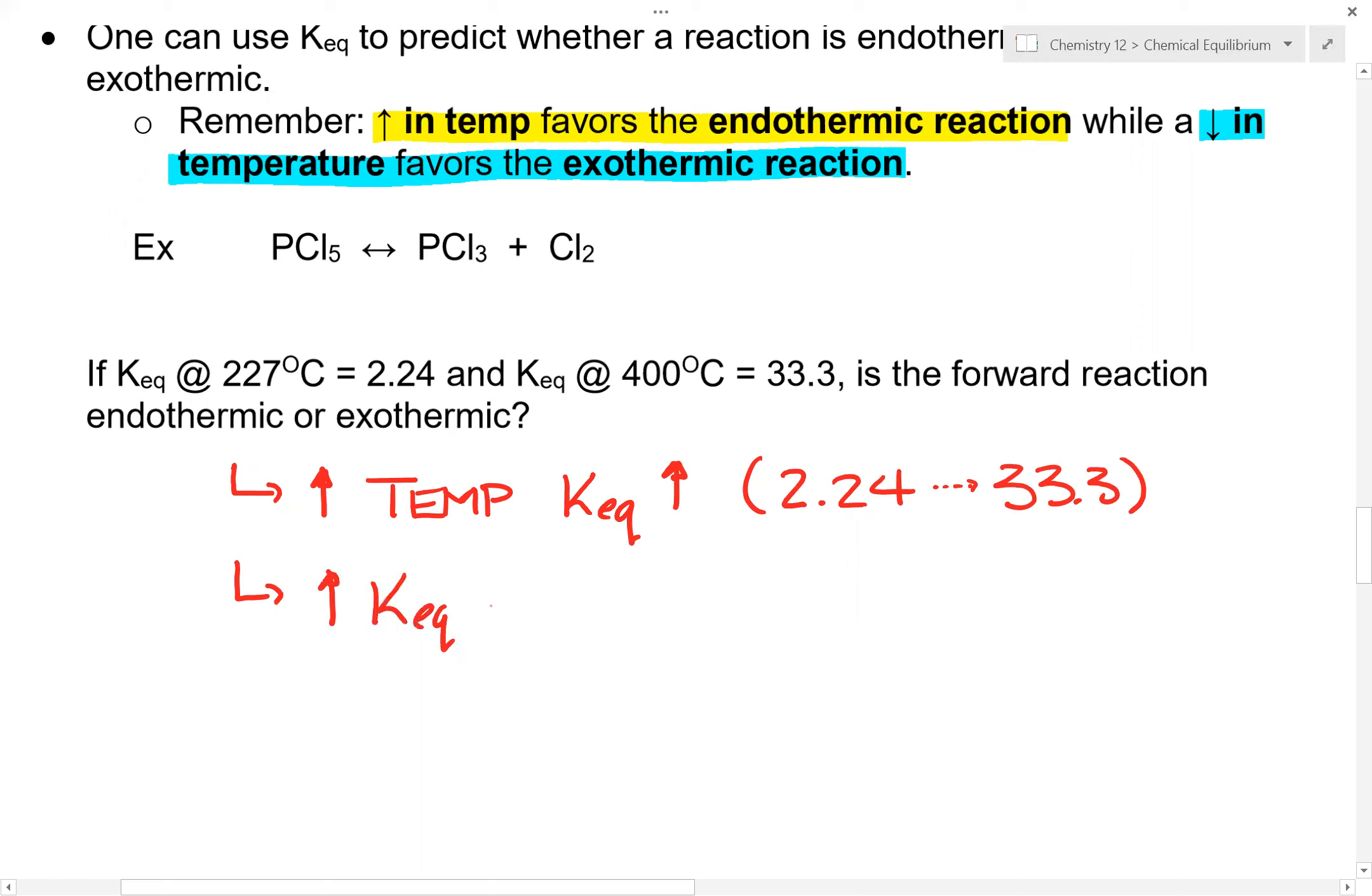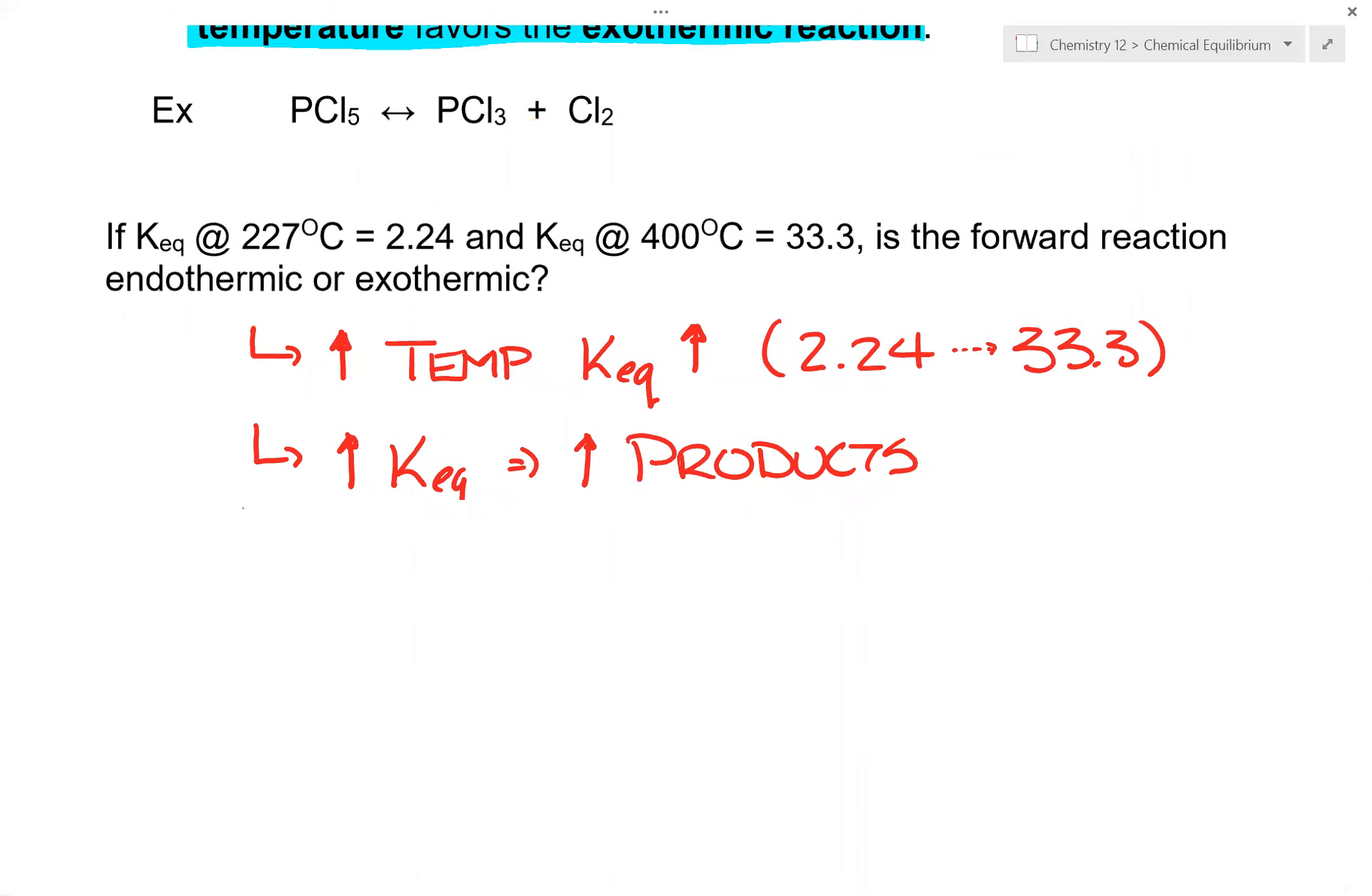What that means is that you have an increase of products during the... okay, you have an increase in the products. If you had an increase in the products, what that means is that the equilibrium must have shifted to the left.